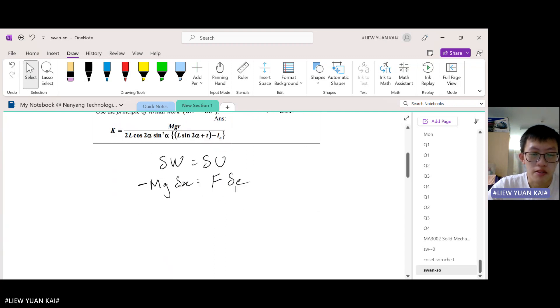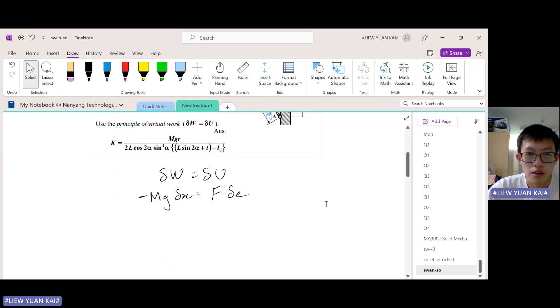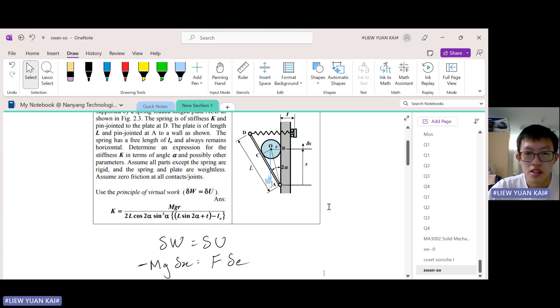So now we have to relate the infinitesimals δx and δe to a common variable. Now, when you look at the diagram, the common variable to take is alpha. Why is that the case? Because when alpha changes, notice that the spring extension will change.